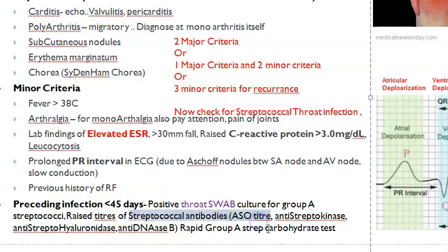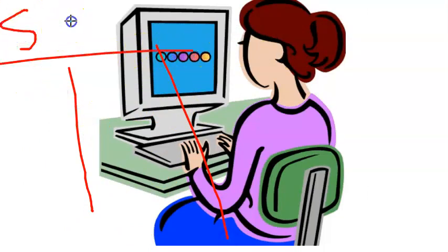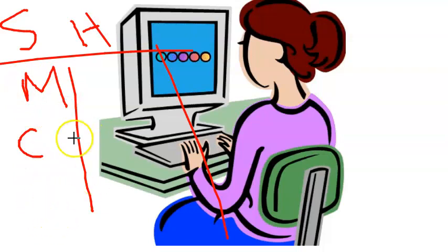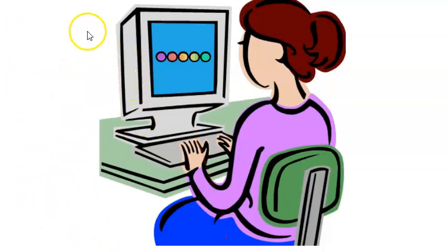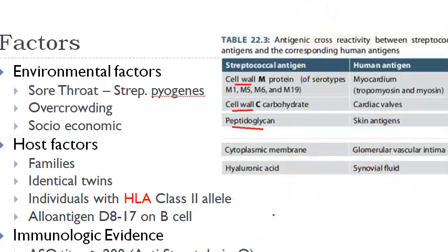Lab tests to confirm include: ASO titer, anti-streptokinase, anti-streptohyaluronidase, anti-DNase B, and a rapid Group A streptococcal carbohydrate test. These detect antibodies against streptococcal proteins — M protein, C carbohydrate, peptidoglycan — which mimic proteins in our heart, valves, skin, kidney, and synovial fluid.